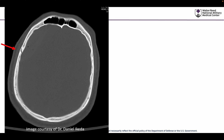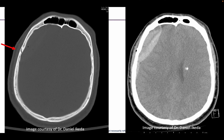We see this convexity frontotemporal non-displaced fracture, but we always have to keep in mind what's underneath the fracture — the underlying brain parenchyma, the underlying nervous structures, and the underlying vascular structures. In this case, we see the formation of an epidural hematoma from the classical appearance of a frontotemporal fracture likely involving the middle meningeal artery, which meets criteria for operative intervention.